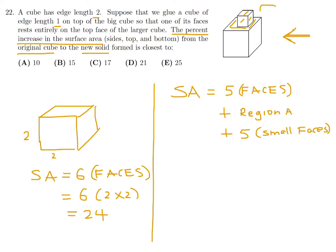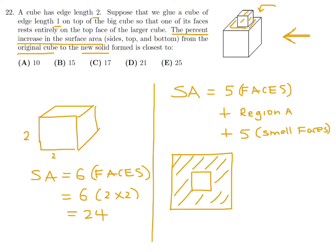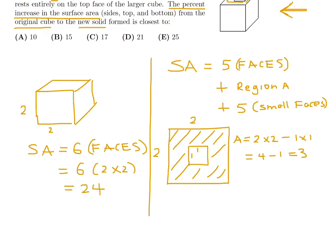I'm going to draw a bird's eye view to understand what's going on. You've got the big cube and then the small cube on top. Region A is the exposed part of the top face, which I'm shading in. To find region A: the sides are two, two, one, one — so region A is two times two minus one times one, which is four minus one, giving three.